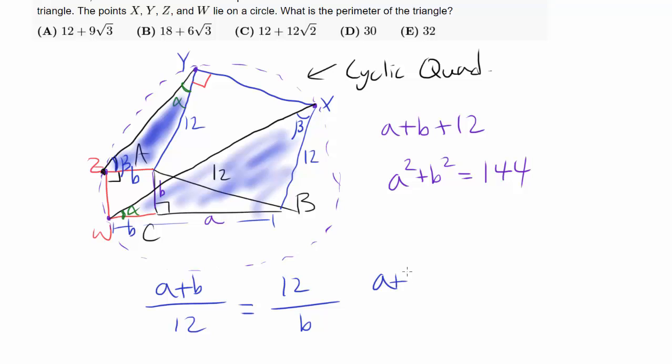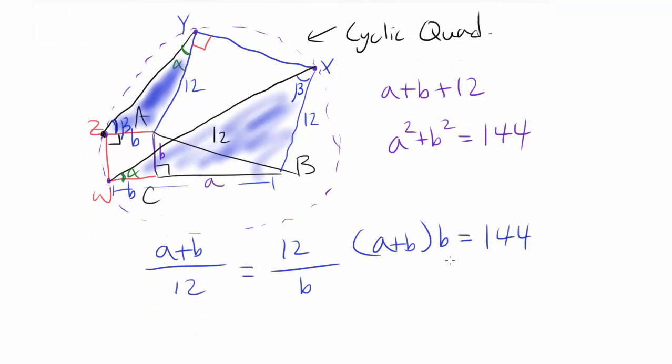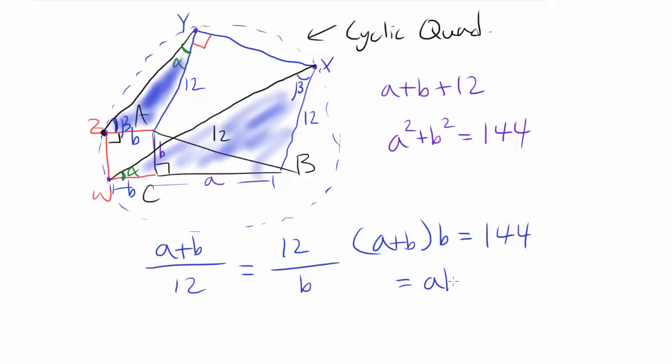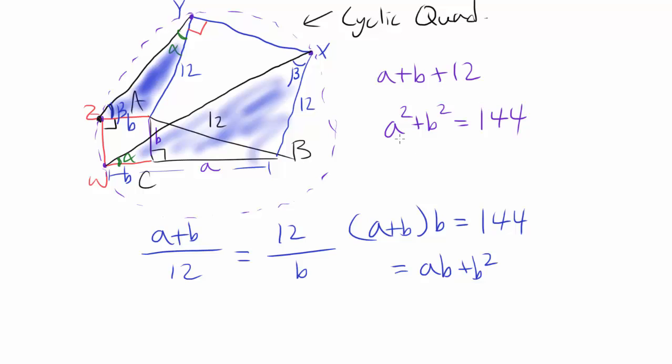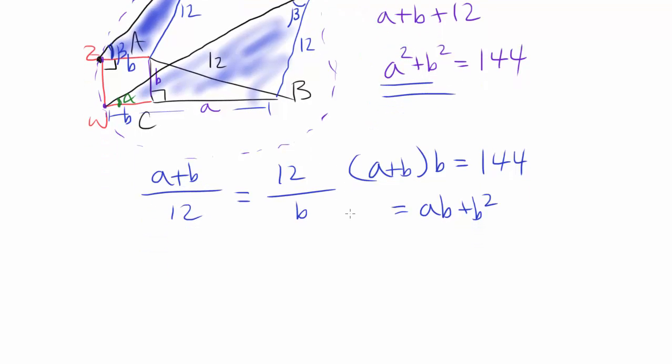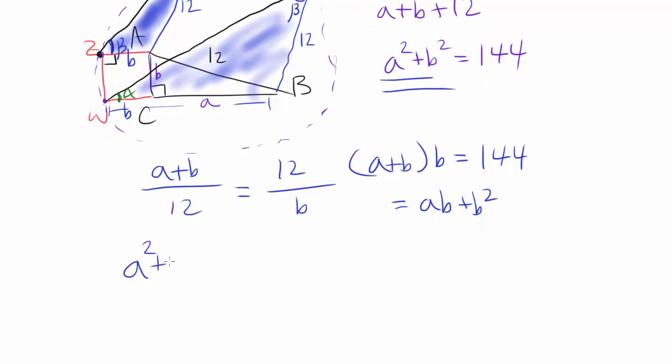So you have A plus B times B is equal to 12 squared or 144. Also known as AB plus B squared is 144. But what else do we know to be equal to 144? A squared plus B squared. So A squared plus B squared has to equal to AB plus B squared, which is 144. B squares cancel out. Dividing by A gets you A is equal to B.